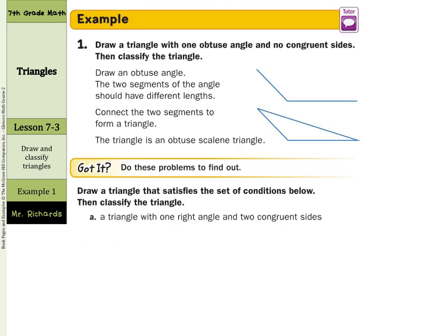Draw the triangle with one obtuse angle and no congruent sides then classify the triangle. You can see how they drew an obtuse angle here. And you might as well make them with different lengths to make sure they're not congruent. And then you connect the two segments. And that's an obtuse scalene triangle. You can classify it by its obtuse angle and its no equal sides. So obtuse scalene.